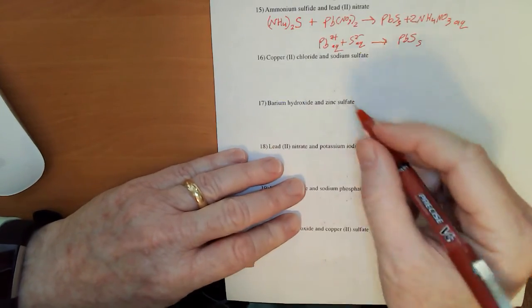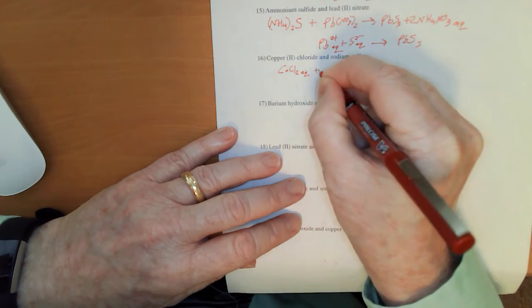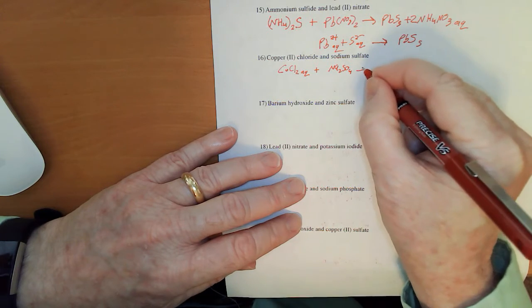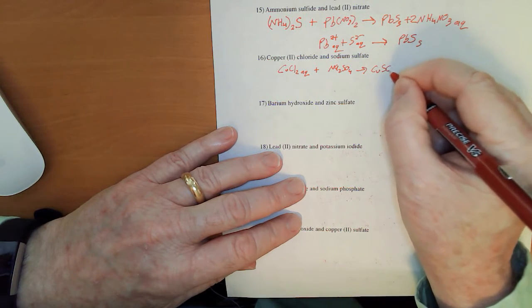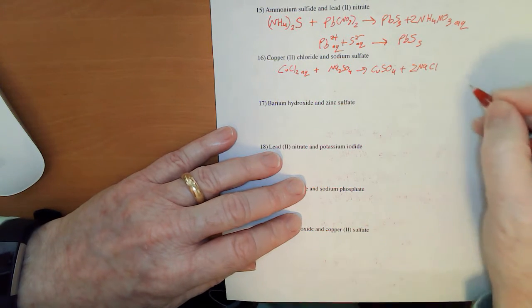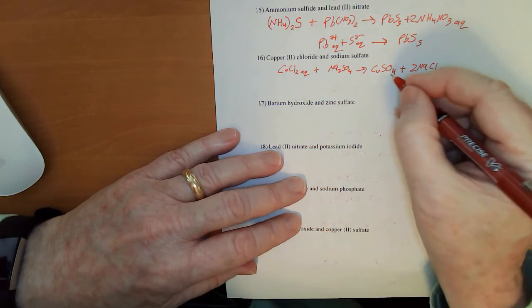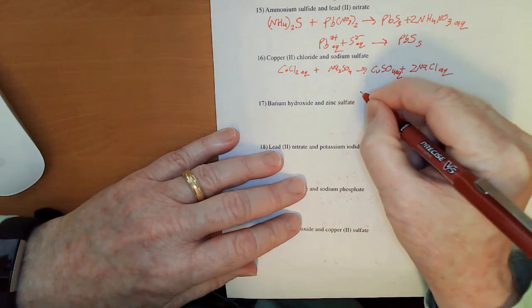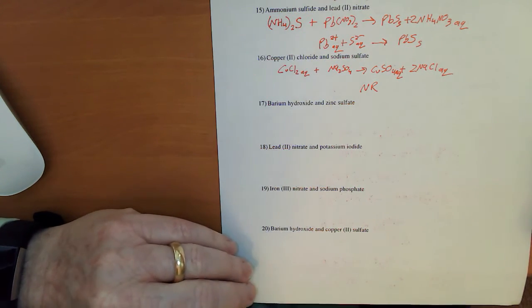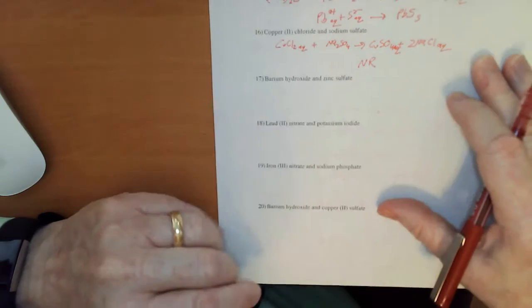Copper 2 chloride and sodium sulfate. CuCl2 and Na2SO4 to give us CuSO4 and NaCl. I'm going to need a 2 there. Table salt, we know, is completely soluble. Actually, so is copper sulfate. So, that's another one of the no reactions. And you can rest assured that on the tests, I'm never going to give you ones that are no reactions. They'll always react.